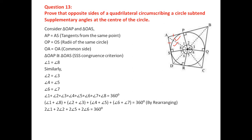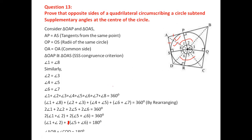Since equal pairs can be grouped: 2(angle 1) + 2(angle 2) + 2(angle 5) + 2(angle 6) = 360°. Dividing by 2: angle 1 + angle 2 + angle 5 + angle 6 = 180°. Now angle 1 + angle 2 = angle AOB, and angle 5 + angle 6 = angle COD. Therefore angle AOB + angle COD = 180°. The angles subtended by opposite sides are supplementary.